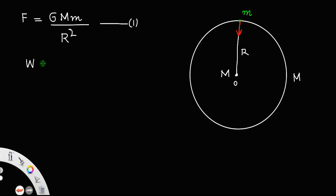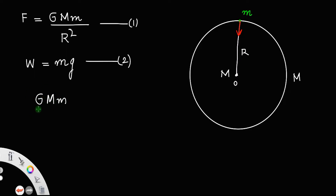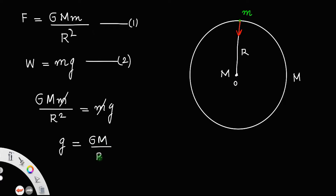This force is also equal to weight, and we know weight is always equal to mass into gravity. Both these represent force and they are equal, which means GMm/r² = mg. Cancel these masses and you will get g = GM/r². That is the expression for gravity on the surface.